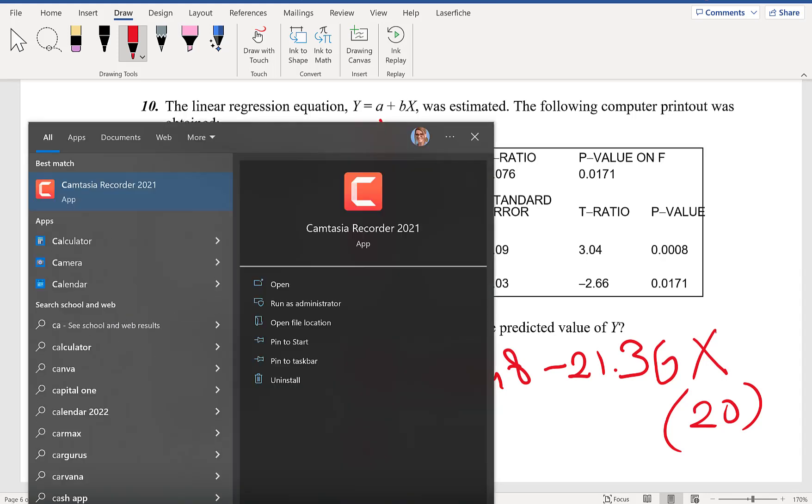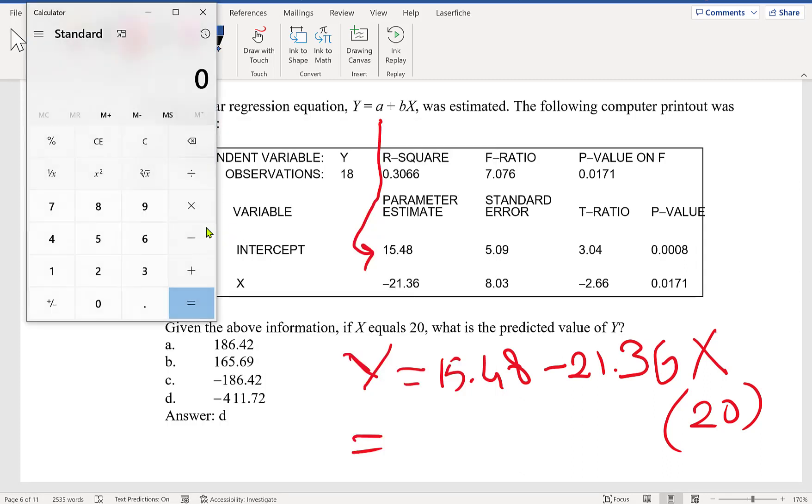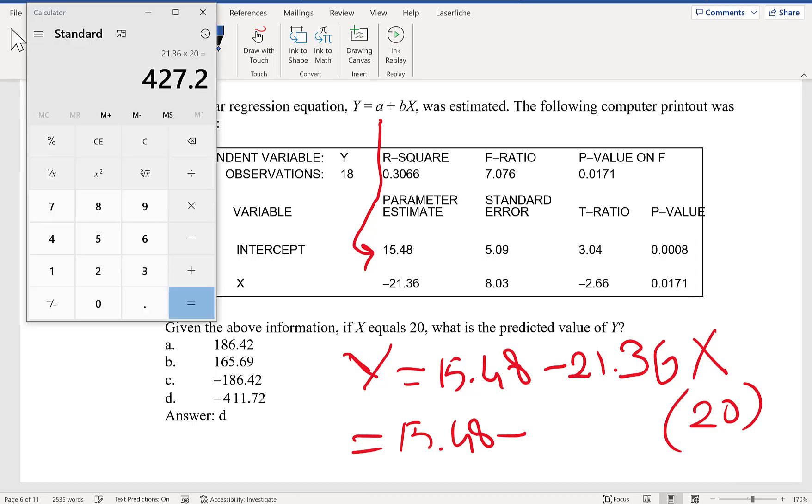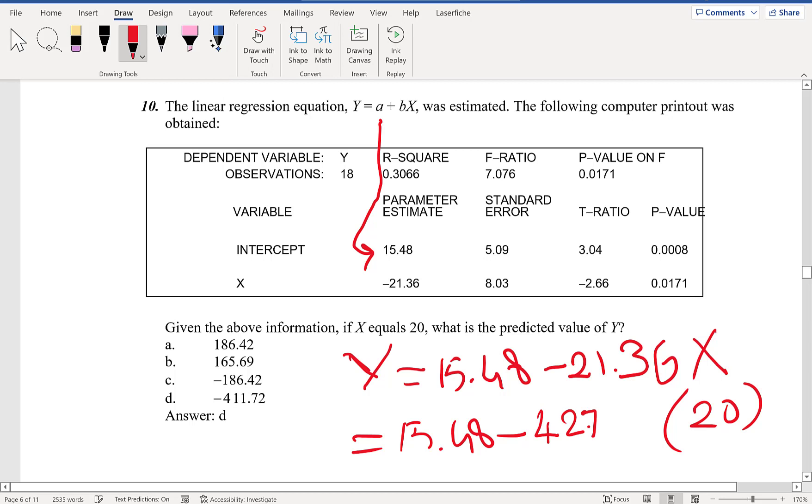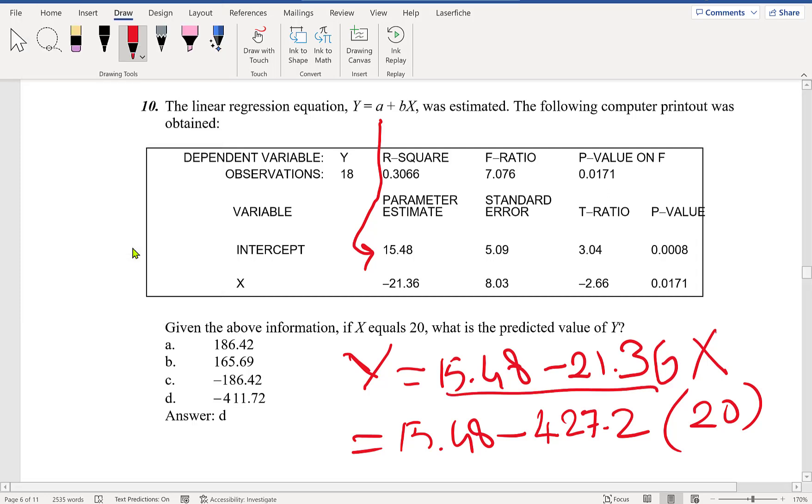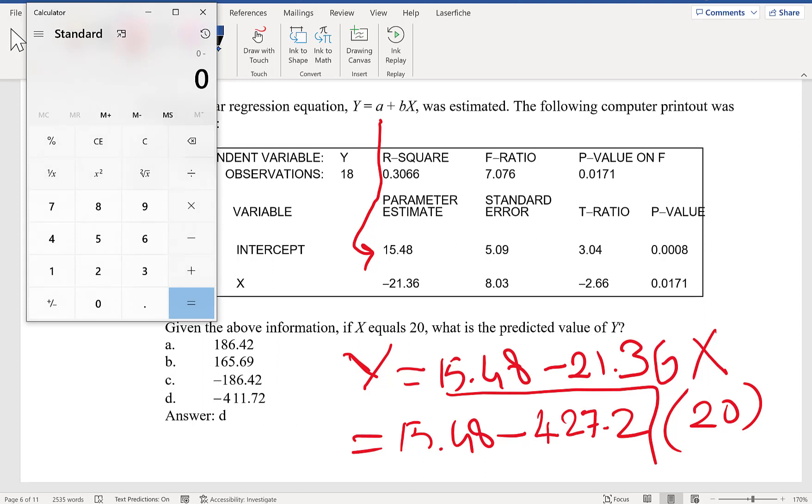We're going to multiply 21.36 times 20. This is 15.48 minus this number, which is 427.2. Let me do it from the beginning: negative 427.2 plus 15.48. It's going to be negative 411.72.